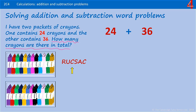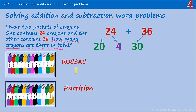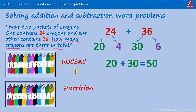To solve this, we are going to use partitioning for adding 24 and 36. 24 partitioned is 20 and 4. 36 partitioned is 30 and 6. Adding the tens first: 20 and 30, that's 50. Adding the ones: 4 and 6, that's 10.